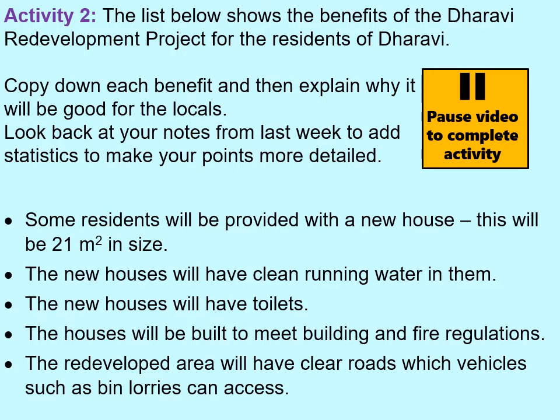Hopefully you've been able to explain why each bullet point is positive. People are going to get a new house — newly built, clean and fresh inside, with separate rooms for different family members, a separate kitchen, separate toilets, and separate bedrooms, giving people privacy and hopefully a high quality living space. The new houses will have clean running water, so people will immediately be healthier because they'll have access to clean water all day. They will not have to drink dirty water and will be at much lower risk of contracting diseases such as cholera and typhoid.